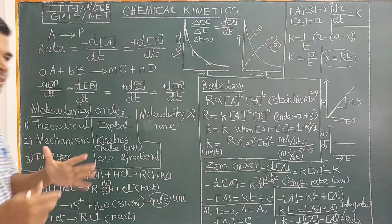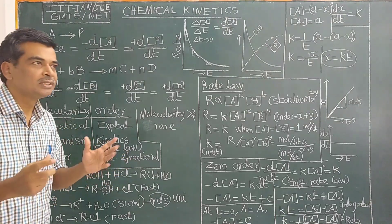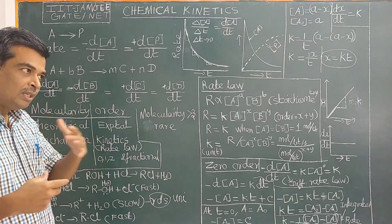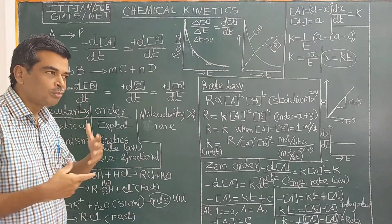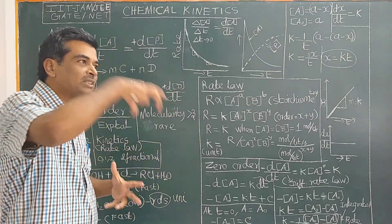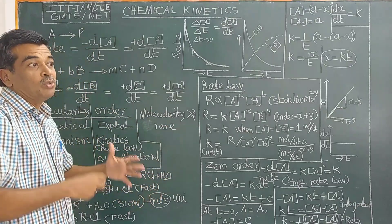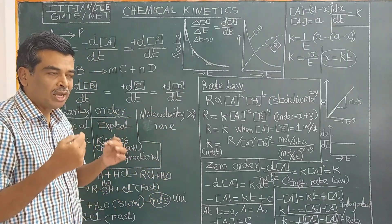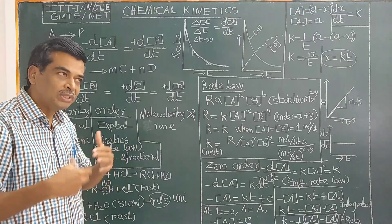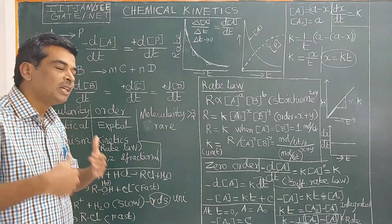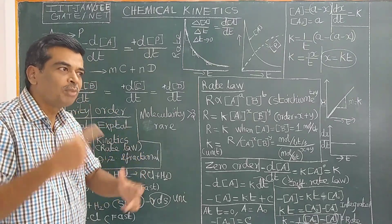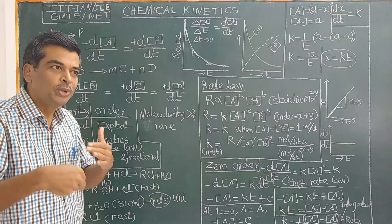Let us see a simple example. If you are watching a movie in a cinema hall, once the movie is over, the number of people coming out — the rate of people coming out — depends upon the number of people present inside the cinema hall. In the initial time, once the cinema is over, the rate of people coming out will be high. As time goes by, the rate of the reaction decreases — that is, the number of people coming out per unit time will be less.